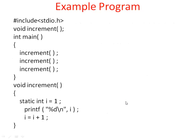Now let us consider a simple program where we can use a static variable inside a function. I have written a small program containing two functions: one is main function and the other is increment function. Inside the main function, I am calling increment function three times. And I define increment function with a static variable i initialized to 1. Inside this increment function, I am printing i value and then incrementing i value, then coming out from the function.